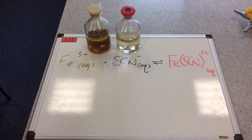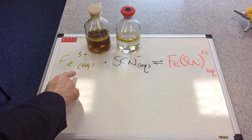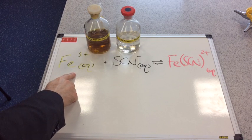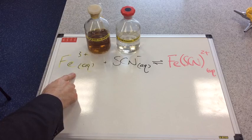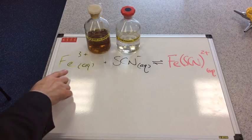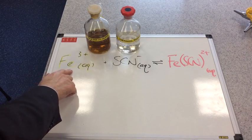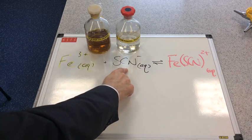In this video I'm going to look at the equilibrium or dynamic equilibrium that exists when you add together a source of iron 3 plus ions in aqueous solution. From the bottle label, I'm going to use iron 3 chloride that contains iron 3 plus ions and I'm going to add that to a source of thiocyanate ions, so I'm using potassium thiocyanate.